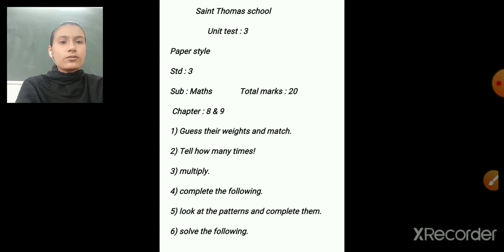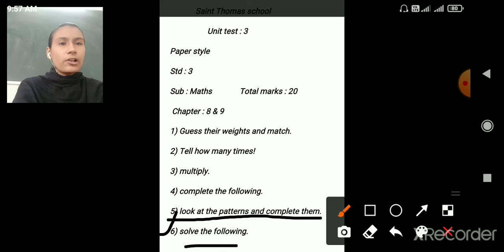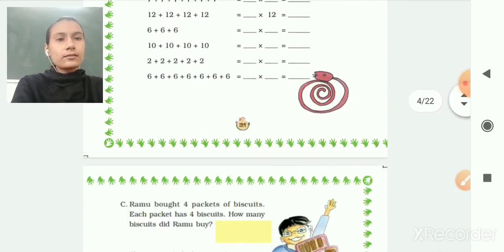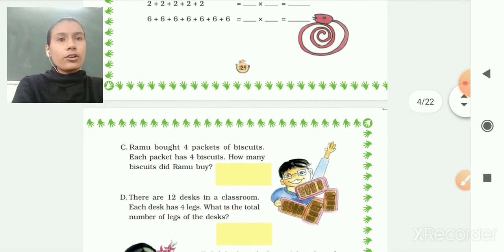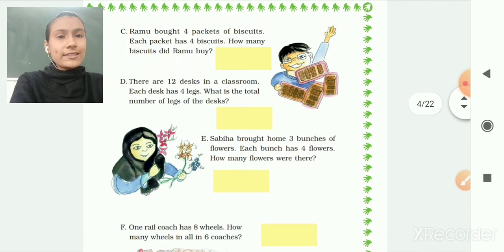In the last video, we have seen till here. Now let's see the next Roman, Roman number 6, solve the following. So you can see here in chapter number 9, how many times? Here on page number 125, solve the following is there.